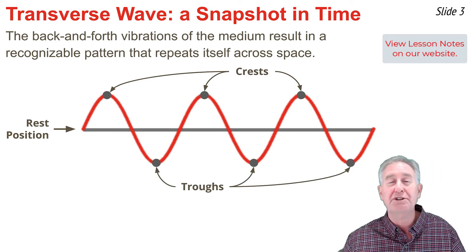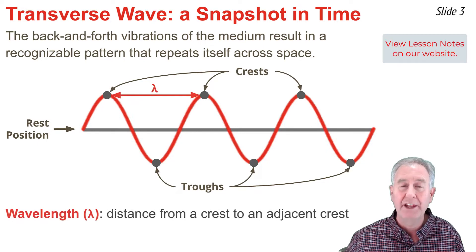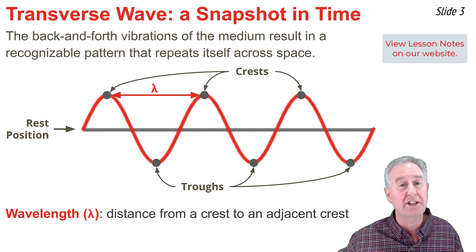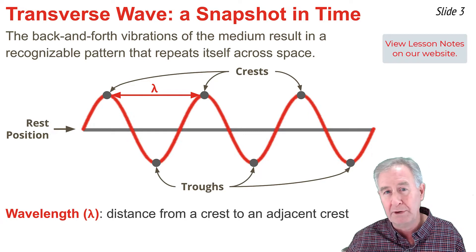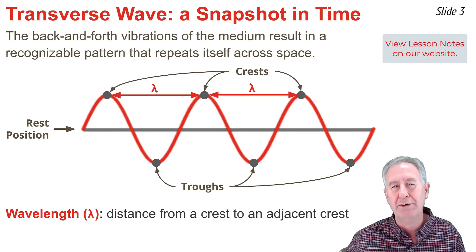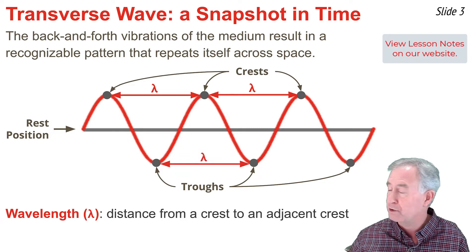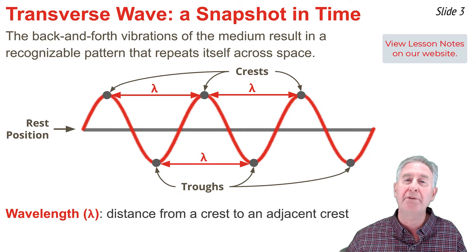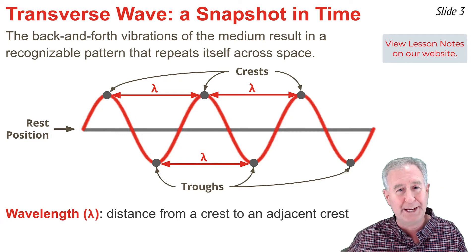There are two quantities to point out. The first is the wavelength — the distance from a crest to the next adjacent crest. It doesn't have to be from the first to the second crest; it could be from the second to the third, or even the distance from a trough to the next adjacent trough, as shown. The symbol for wavelength is the Greek letter lambda, labeled on the diagram.